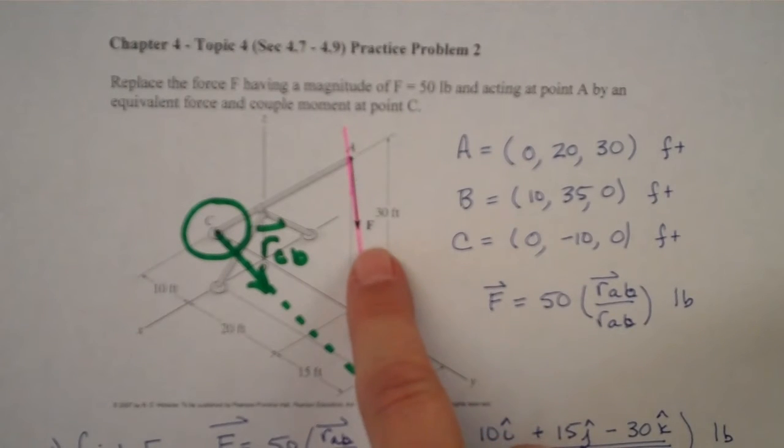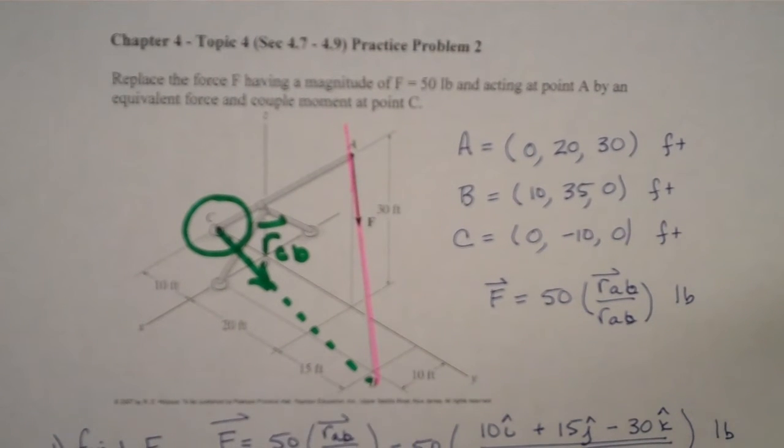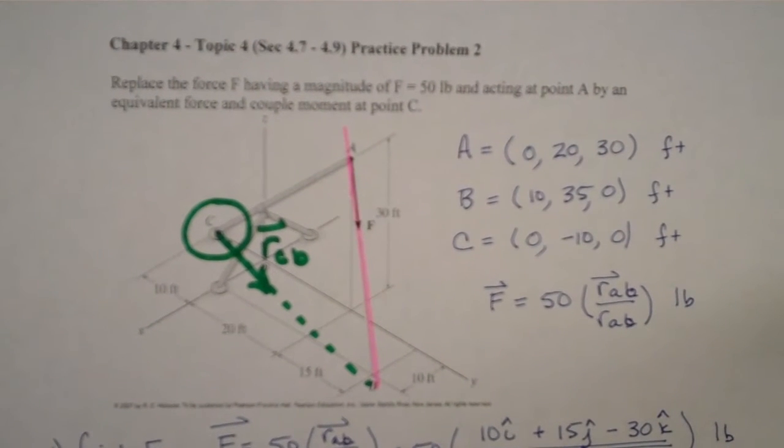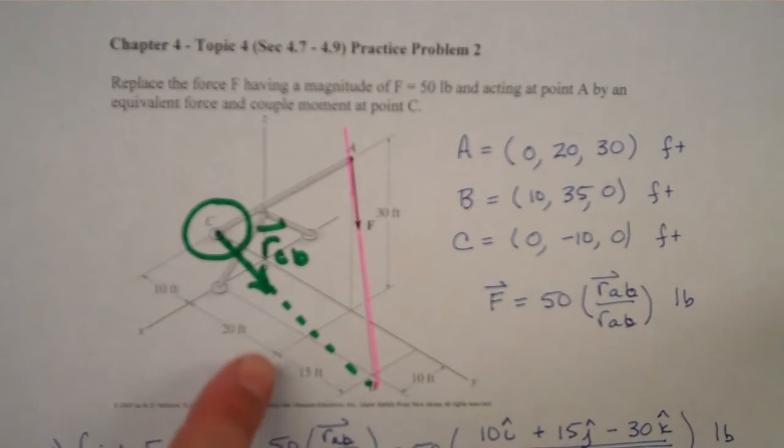So in this case we're given a force of 50 pounds acting from A to point B, so the first thing we're going to need to do of course is change that force to our Cartesian vector. And then we want to find out what that force line is and then we want to shift and find what the moment is about point C, which means that we're going to need to find a vector going from point C out to our line of force.